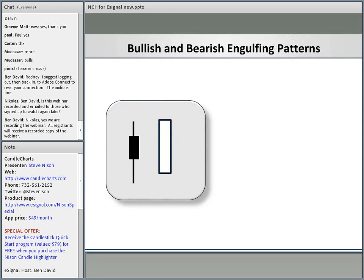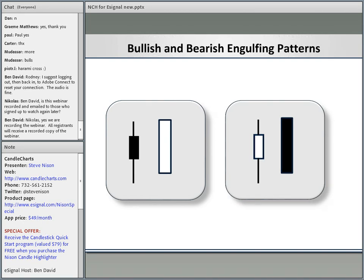Now let's look at one of the basic patterns: the bullish engulfing pattern — that's when a white real body wraps around a black real body. I could spend a good half hour on engulfing patterns, but just the basic definition: we can see the bulls are taking over from the bears. A bearish engulfing pattern is when a black or red real body wraps around a green or white real body, depending on how you have your candlestick signals set in eSignal.